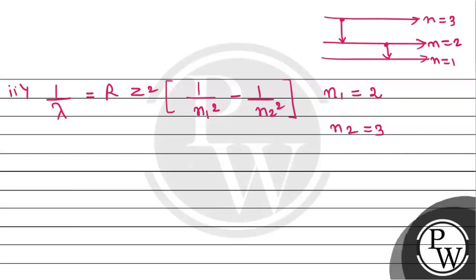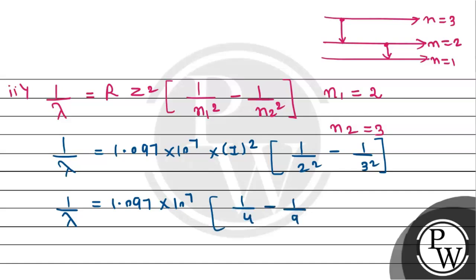We just need to substitute the values. So 1 by lambda equals 1.097 into 10 to the power 7 multiplied by 1 squared into 1 by 2 squared minus 1 by 3 squared. This will be 1.097 into 10 to the power 7 into the bracket 1 by 4 minus 1 by 9. That becomes 9 minus 4, which is 5 by 36. Taking reciprocal, we will get the required wavelength.